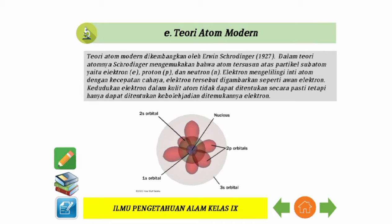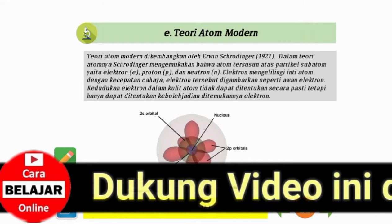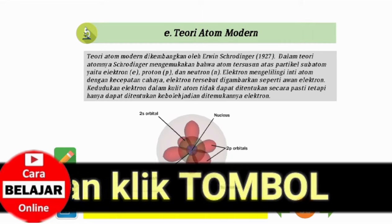Teori atom Modern: Teori atom modern dikembangkan oleh Erwin Schrödinger (1927). Schrödinger mengemukakan bahwa atom tersusun atas partikel subatom yaitu elektron (E), proton (P), dan neutron (N). Elektron mengelilingi inti atom dengan kecepatan cahaya dan digambarkan seperti awan elektron. Kedudukan elektron dalam kulit atom tidak dapat ditentukan secara pasti, tetapi hanya dapat ditentukan kebolehjadian ditemukannya elektron.